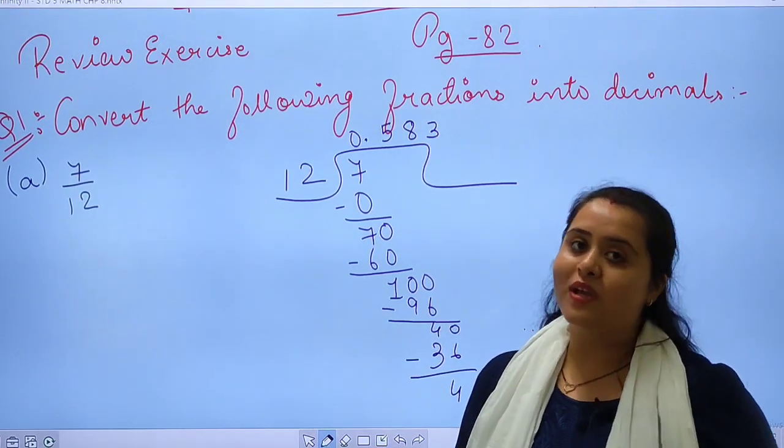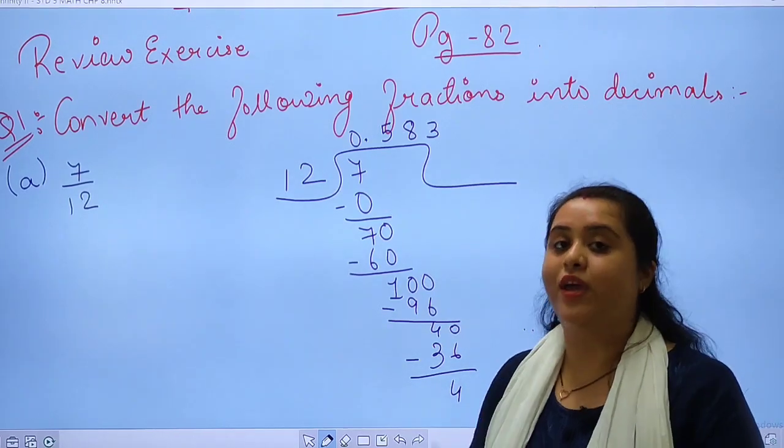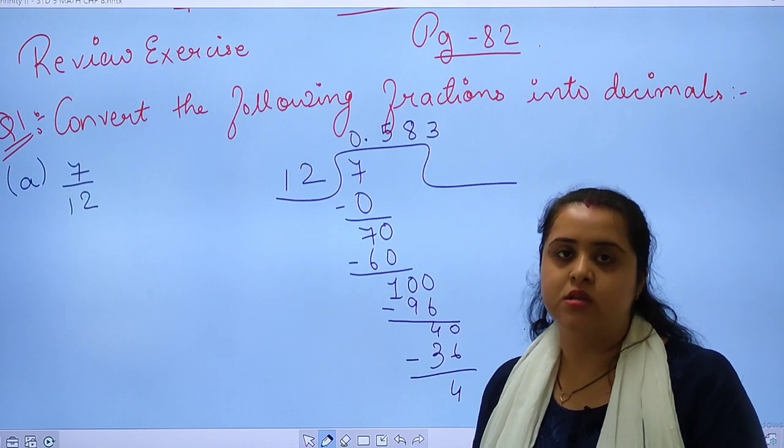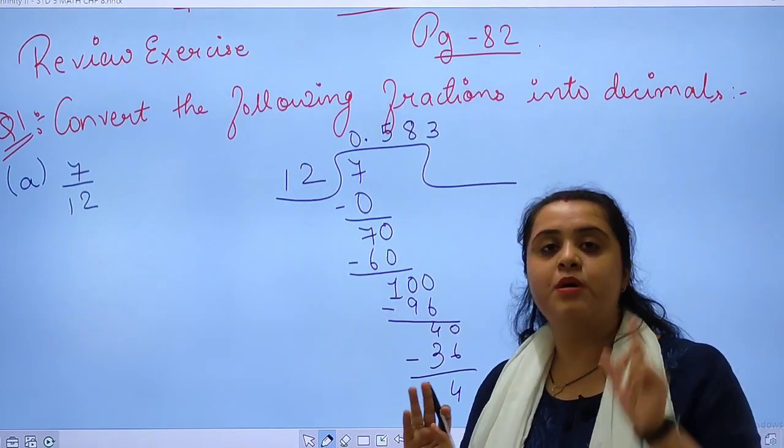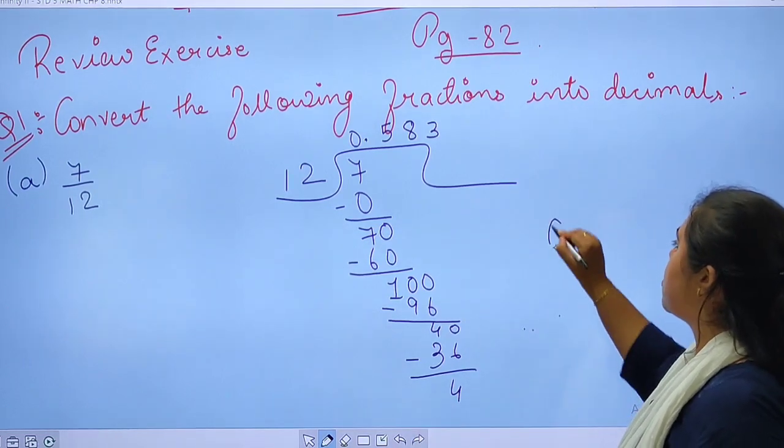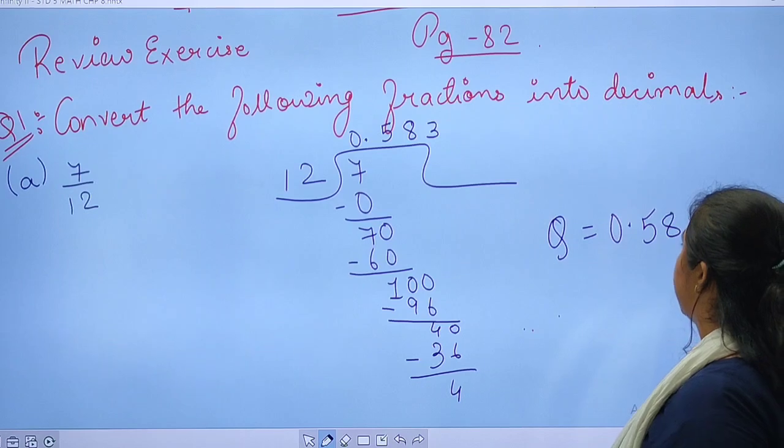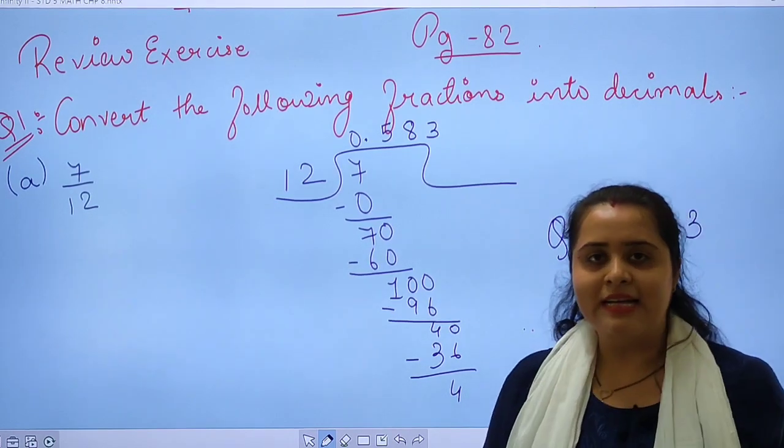12, 3 times 36. Again, 4 will be there and it will be going on. Students, always remember, after decimal, if you wish you can go to 3 points and 4 points, not more than that. Maximum 4 decimals. So in this case, your answer will be 0.583.